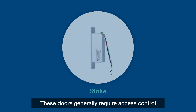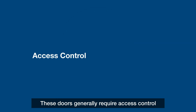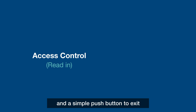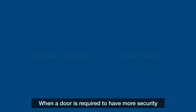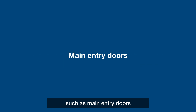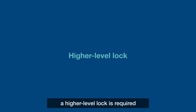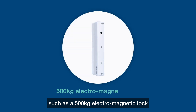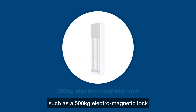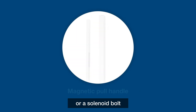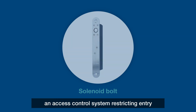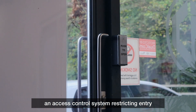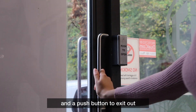Locking for door control is often selected as a 300 kilogram electromagnetic lock or a standard strike. These doors generally require access control authentication to enter and a simple push button to exit. When a door is required to have more security, such as main entry doors, a higher level lock is required, such as a 500 kilogram electromagnetic lock, a full-length pull handle, or a solenoid bolt.